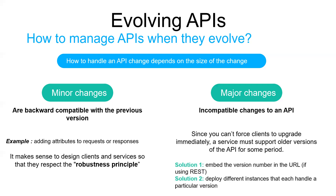Sometimes you must make major, incompatible changes to an API. Because you can't force clients to upgrade immediately, the service must simultaneously support all versions of the API for some period of time. If you are using an HTTP-based IPC mechanism such as REST, one approach is to embed the major version number in the URL — for example, version one paths are prefixed with /v1 and version two with /v2. Another solution is to configure service adapters that implement the APIs and contain logic to translate between old and new versions.